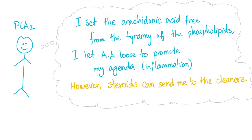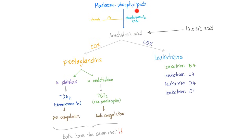Let the phospholipase A2 enzyme speak: 'I set the arachidonic acid free from the tyranny of phospholipids. I let arachidonic acid loose to promote my agenda — inflammation. However, steroids can send me to the cleaners.' Membrane phospholipids, through phospholipase A2, set arachidonic acid free. By cyclooxygenase, we get prostaglandins. By lipoxygenase, we get leukotrienes.